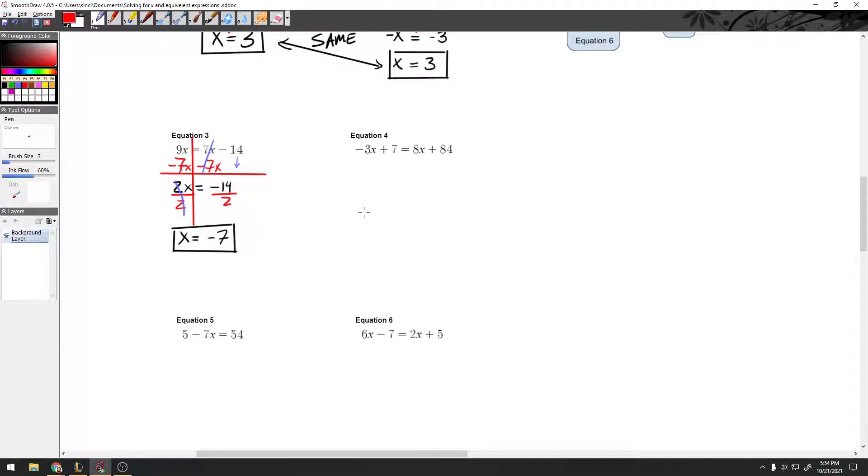Alright, let's go to this next one. Again, I have the x on both sides, so I want to go for the smaller one. Here are my two x's. I have a negative 3 and an 8. Negative 3 is obviously a smaller one, so I'm going to go plus 3x on both sides. These cross out. The 7 will come down. The 84 will come down, and then I'll have to put this into the calculator. So my 7 equals, and I believe this is 11x plus 84.